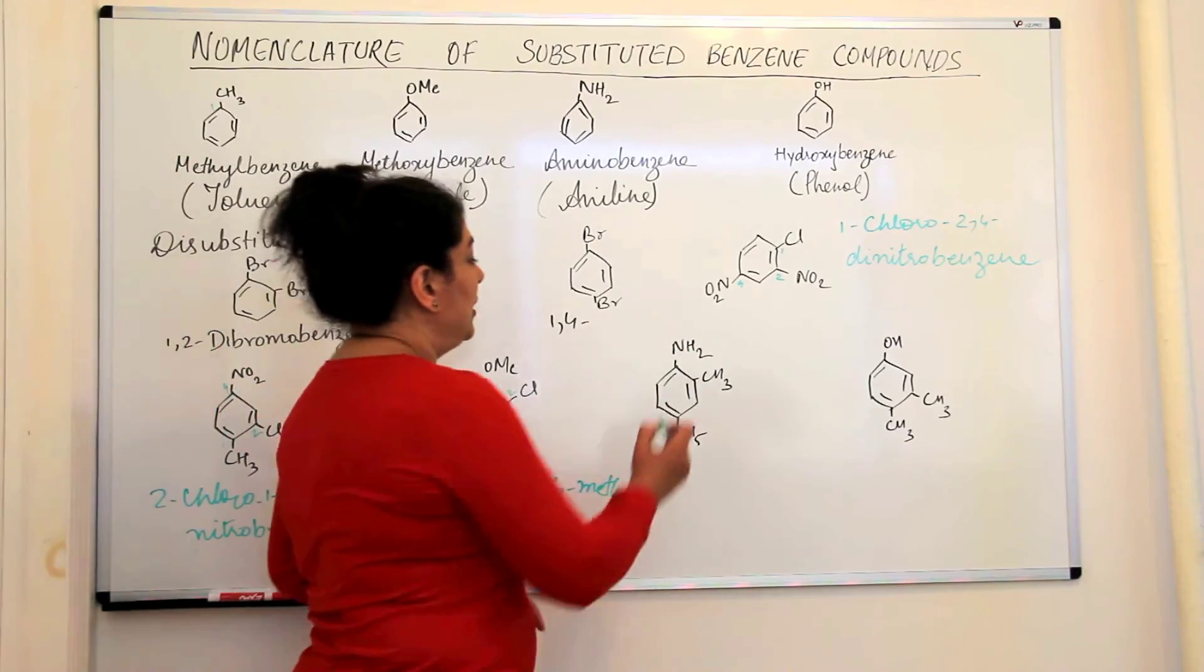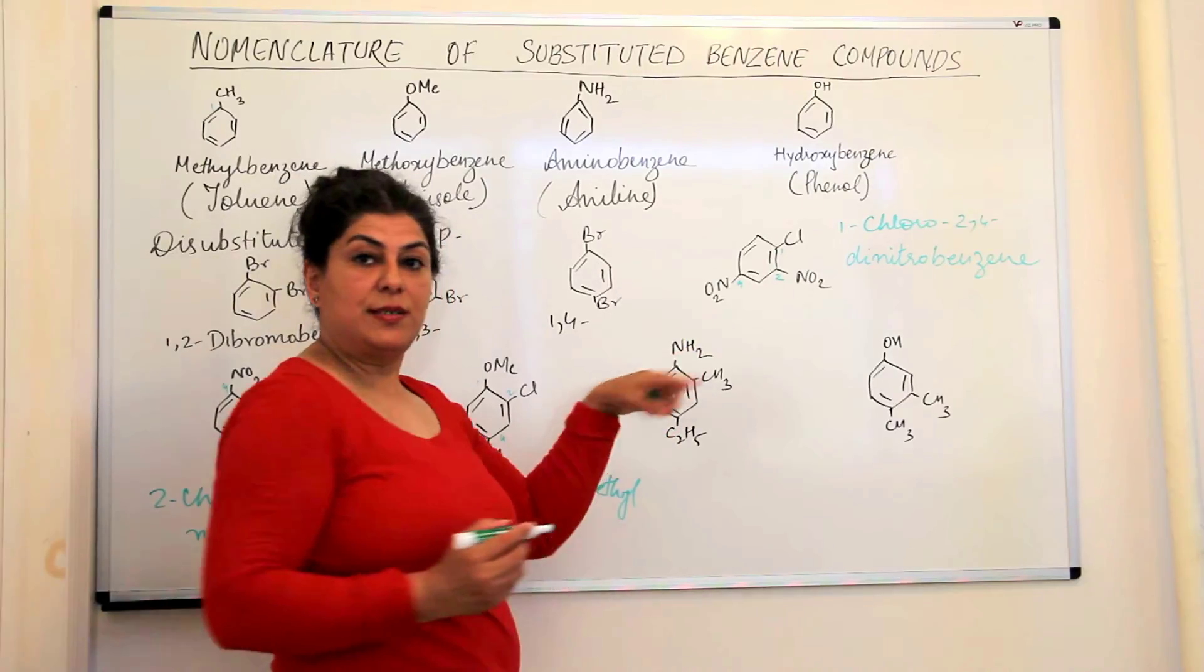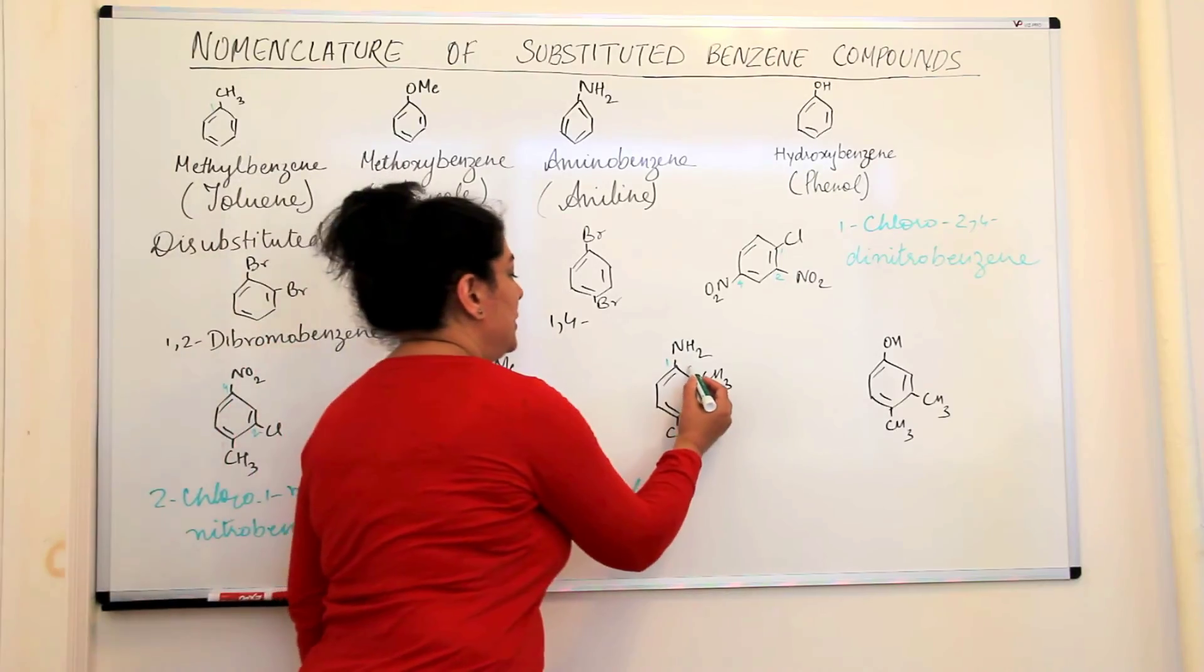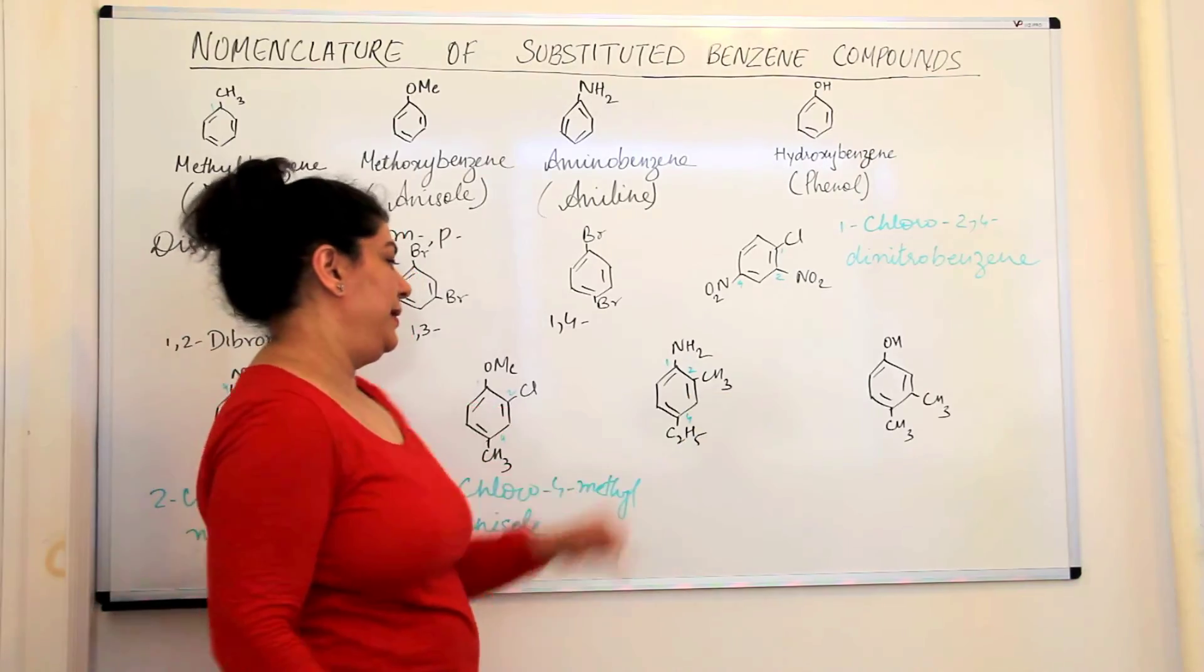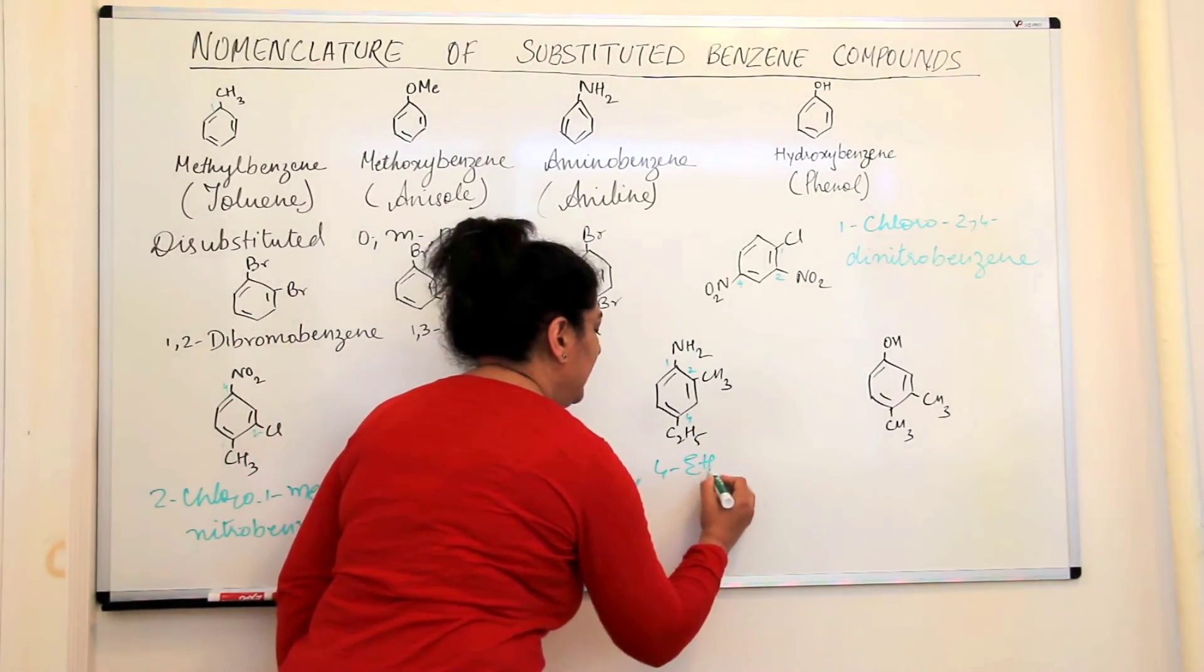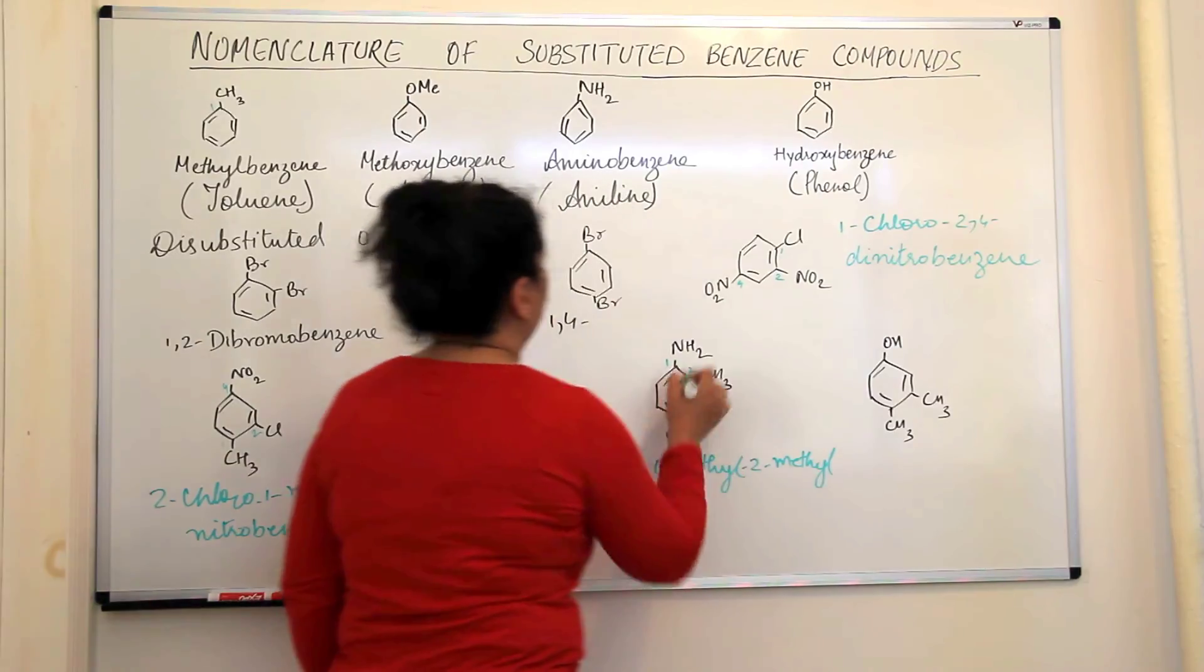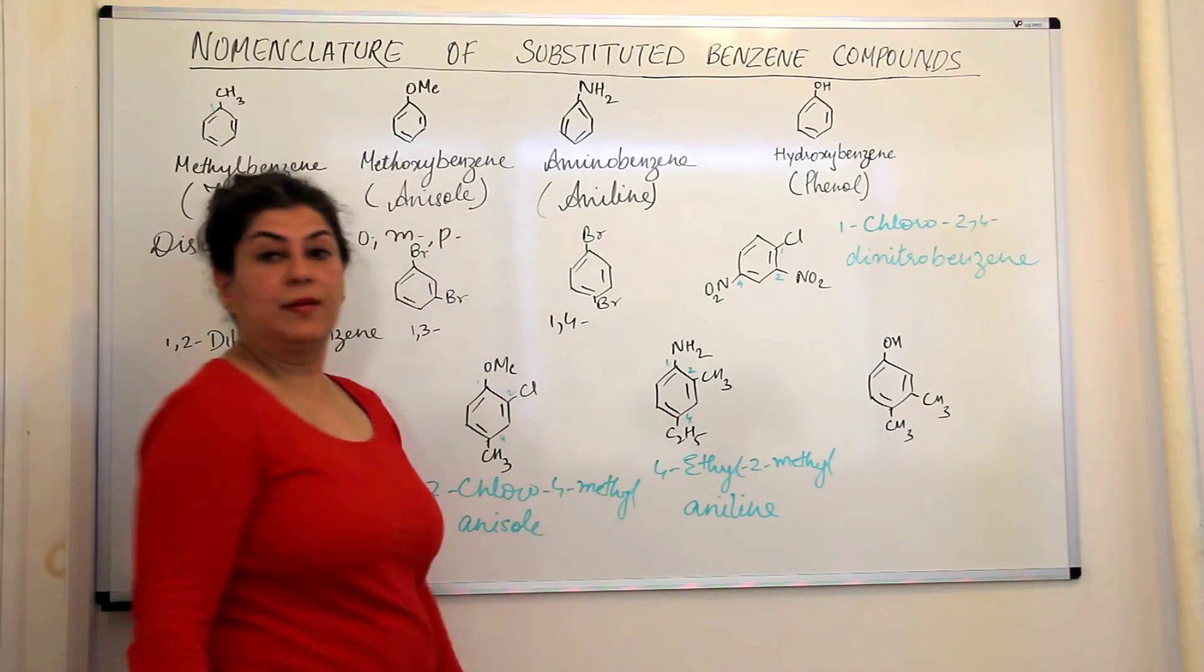Look at this compound now. This is amine. So, it is an aniline. Let us assume this. Let us use this in the IUPAC nomenclature. If we do that, this should be the first carbon, this would be the second carbon and this is the fourth carbon. Now, this is ethyl, this is methyl. So, ethyl comes first. So, we write 4-ethyl, 2-methyl and this would be aniline. Right?